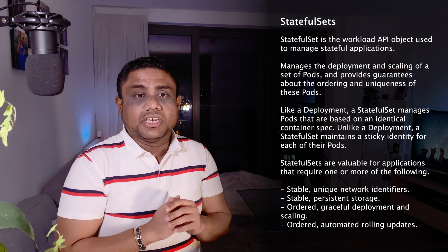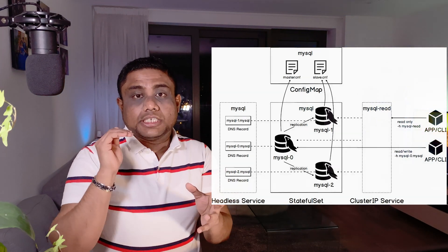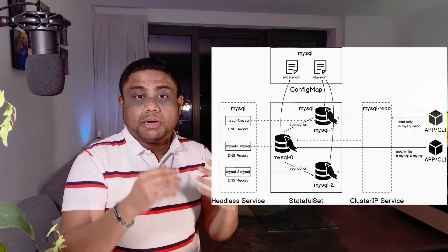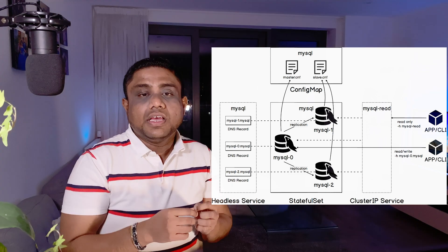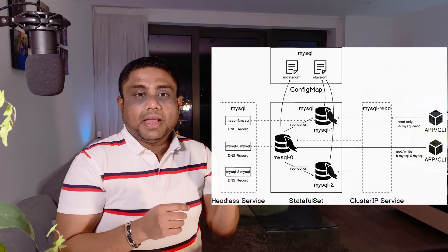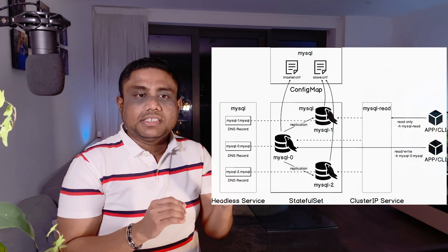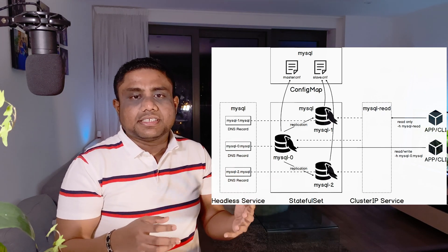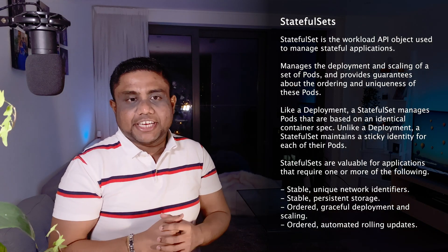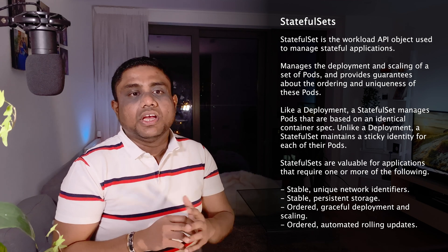Deployments are mainly used for stateless applications. When you want to deploy stateful applications you need to use stateful sets instead of deployments. For example, when you want to deploy a MySQL cluster in Kubernetes, the MySQL cluster master pod needs to spin up first, then the first slave pod needs to come up and replicate data from the master. Slave 2 needs to wait until slave 1 is ready, then slave 2 comes up and data is replicated. For slaves to connect to the master consistently, they need a consistent hostname or address — they cannot rely on IP addresses as they are dynamically assigned and change when a pod crashes.